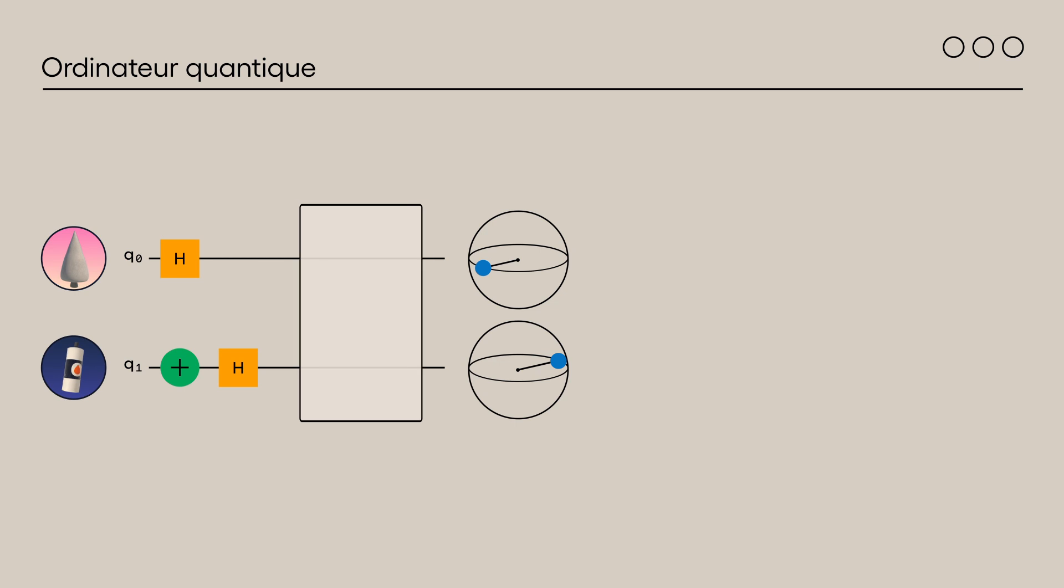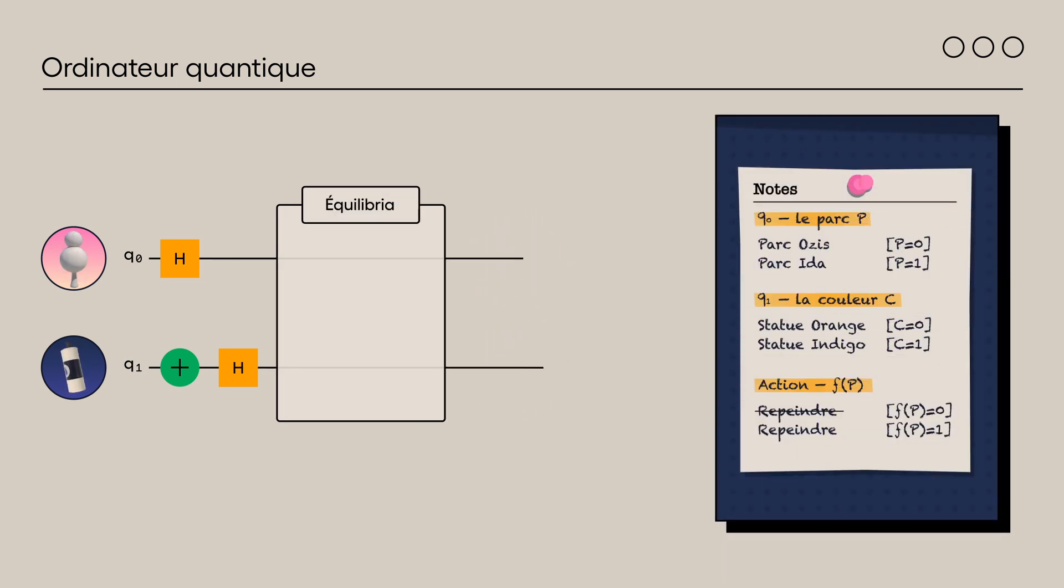Dans la boîte suivante, nous allons voir comment agissent Constantin et Equilibria avec cette statue quantique. Si Constantin procrastine et qu'il ne change pas les couleurs des statues, difficile d'imaginer un circuit plus simple. Il n'y a aucune porte à ajouter sur Q1. Dans le scénario opposé, il inverse la couleur de la statue indépendamment du parc où elle se trouve. Une simple porte NOT appliquée sur Q1 permet de réaliser ceci.